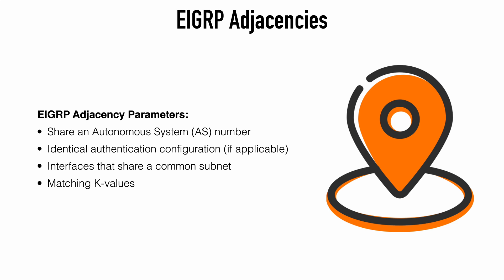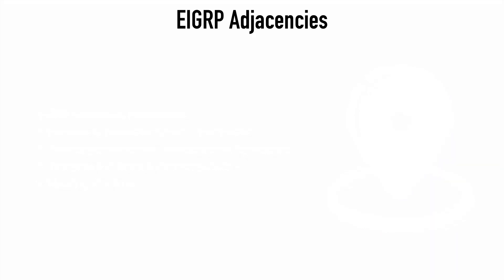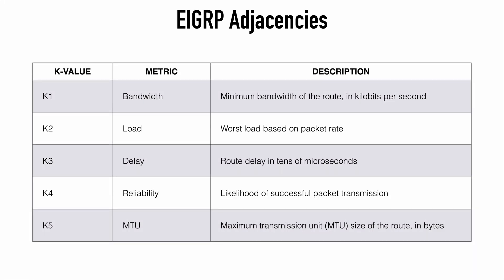When it comes to the formation of an adjacency, all neighbors have to agree upon the following set of parameters. The devices have to be in the same autonomous system number. If they're using authentication, they must have the same authentication configuration. Their interfaces must share a common subnet, and their K values must match. The K values are placeholders for certain components that EIGRP uses for composite metric calculation, and you can see those K values listed in this chart.